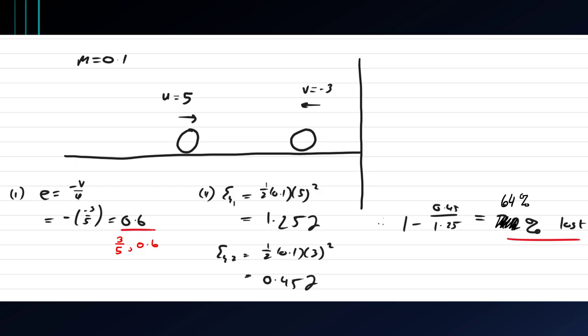The initial kinetic energy is a half times 0.1 times 5 squared, which is 1.25 joules. And the kinetic energy after is a half times 0.1 times 3 squared, which is 0.45 joules.